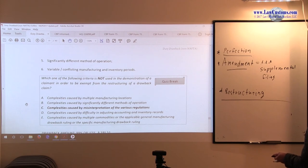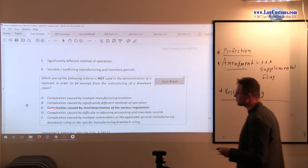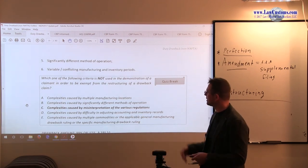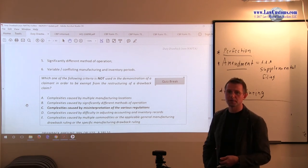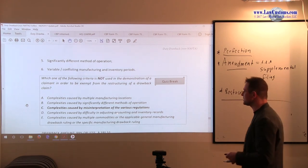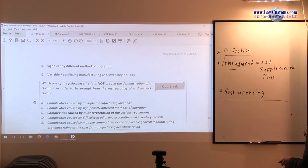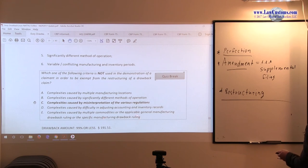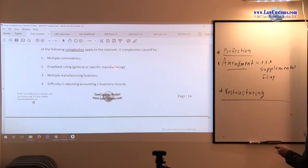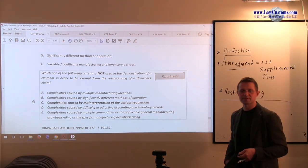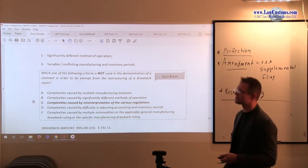Since we are looking for the one that's not, this fits the bill. Let's, it's always a good idea, even though once you find this, to keep continuing knocking others out. Because under the best answer rule, you may find something weird down the line which can raise a red flag. So D, complexities caused by difficulty in adjusting accounting and inventory records. Well, that is right on point to difficulty in adjusting inventory and accounting records, so D is alright. E, complexities caused by multiple commodities or applicable general manufacturing drawback ruling or specific manufacturing drawback ruling. So the drawback ruling, general specific manufacturing, is on the list, so this one is okay. So since we are looking for one that's not, this is clearly the line item which is missing from those six reasons to say no. So C is our choice.